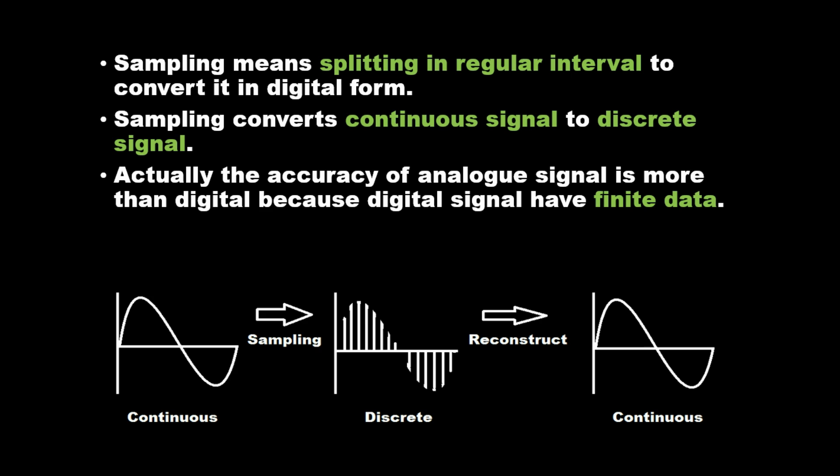Actually the accuracy of analog signal is more than digital because digital signal has finite data. All the positions in discrete signal is a number. So analog signals have some different advantages and digital signals have some different advantages.